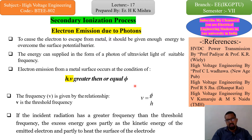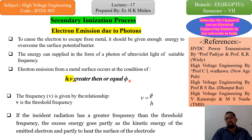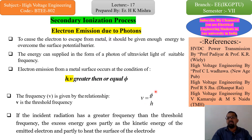Here, HV refers to H (Planck's constant) multiplied by V (frequency), and φ is the work function. The threshold frequency V₀ is given by the relationship V₀ = φ / H, which is the threshold frequency. So generally HV is equivalent to φ, and if we look at V — the threshold frequency — its value is φ upon H.